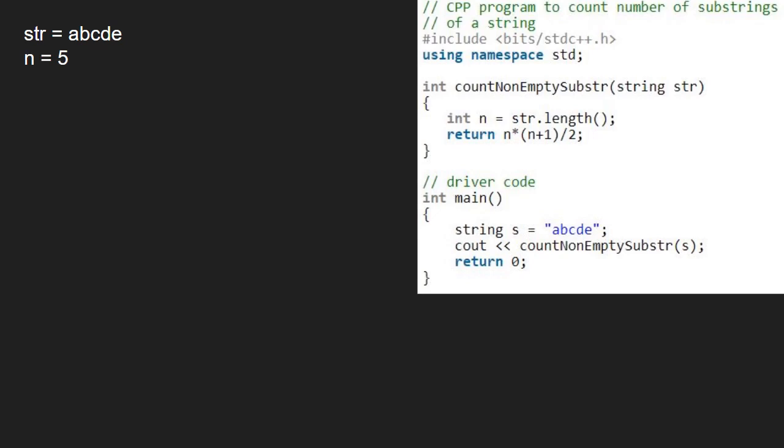Finally, we return n*(n+1)/2, which equals 15, to the main function and print it. There are a total of 15 substrings in "abcde".